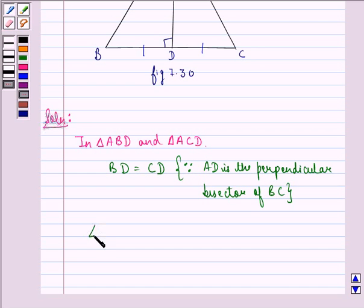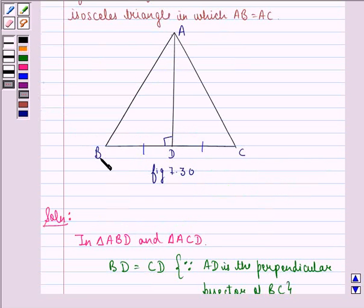We see that angle BDA is equal to angle CDA that is equal to 90 degrees because AD is perpendicular on BC.